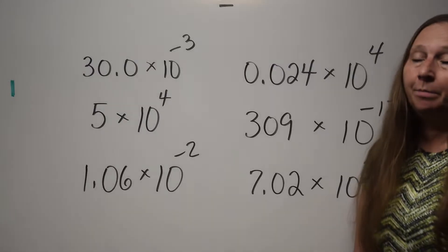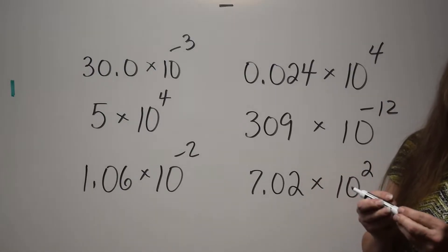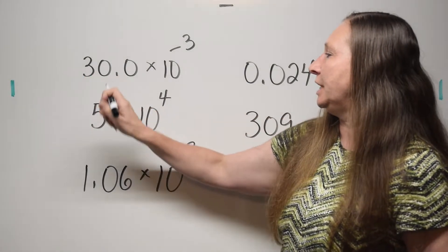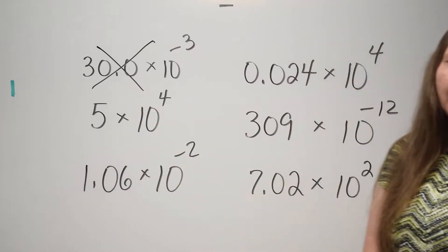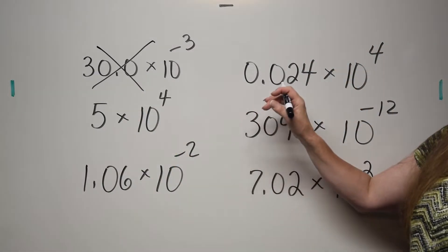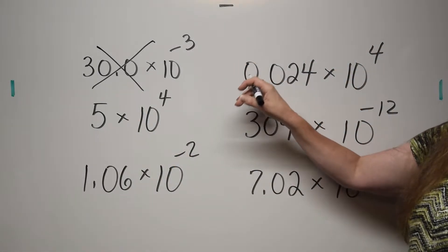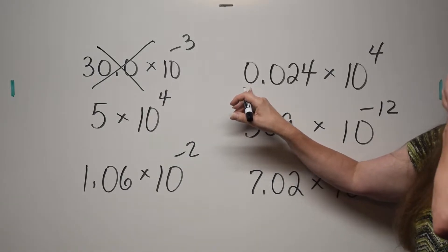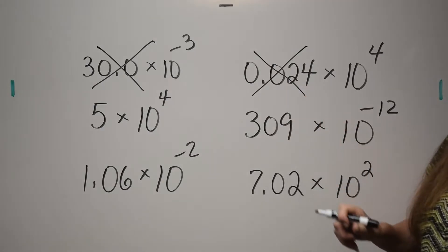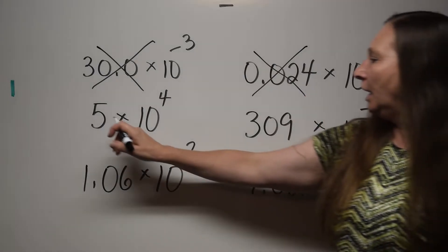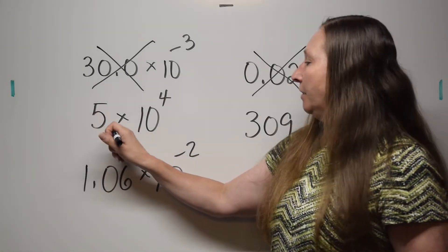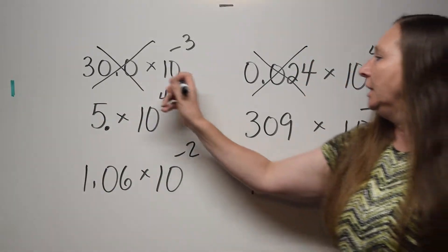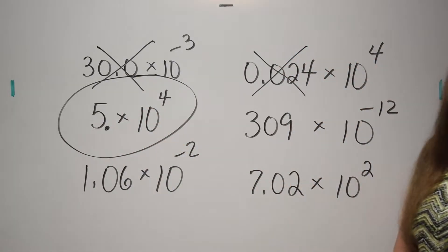Okay, now we're back. Which ones are in correct scientific notation? Well, there are two numbers in front of this decimal, so this is not correct scientific notation. This one here, there are no numbers — the zero doesn't count — there are no numbers in front, so this is not correct scientific notation. Here, this is the number five, so the decimal is understood to be there, and there is only one number in front of the decimal. This is correct scientific notation.